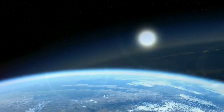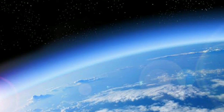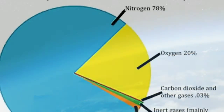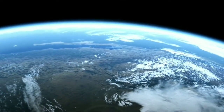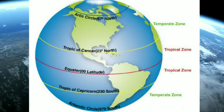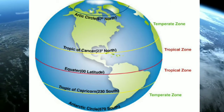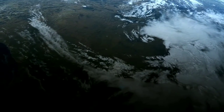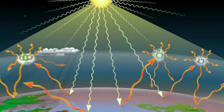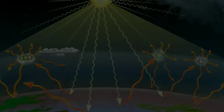Earth's atmosphere consists mostly of nitrogen and oxygen. More solar energy is received by tropical regions than polar regions and is redistributed by atmospheric and ocean circulations. Greenhouse gases also play an important role in regulating the surface temperature.